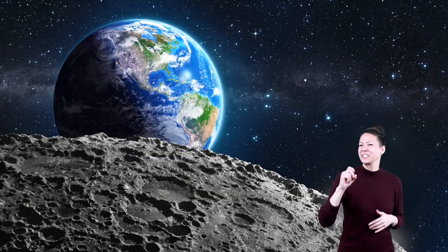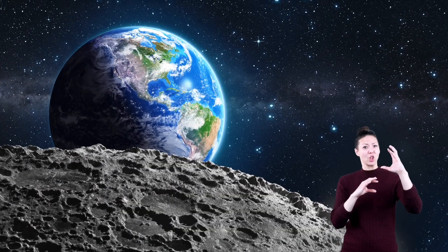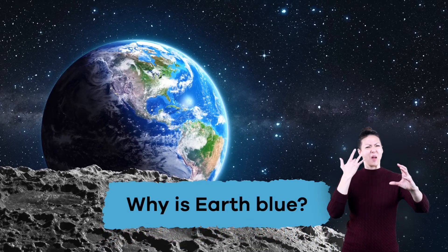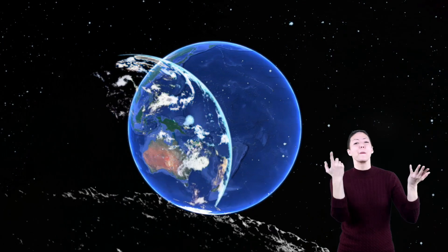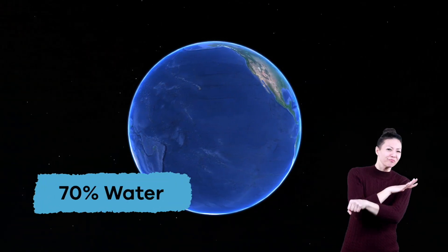Speaking of space, this is a picture of Earth from space. Can you guess why it's mostly blue? That's because 70% of Earth is made of water.